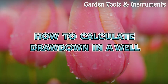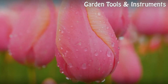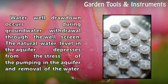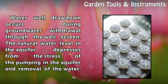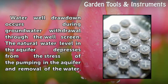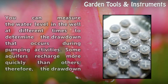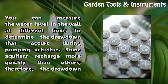How to Calculate Drawdown in a Well. Water well drawdown occurs during groundwater withdrawal through the well screen. The natural water level in the aquifer depresses from the stress of pumping in the aquifer and removal of the water. You can measure the water level in the well at different times to determine the drawdown that occurs during pumping activities.